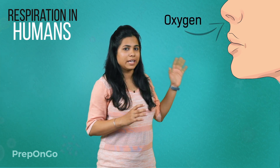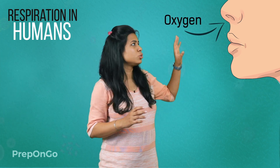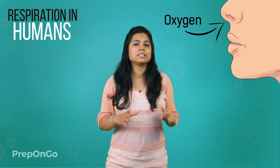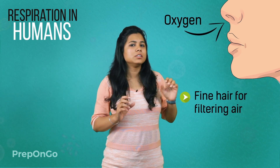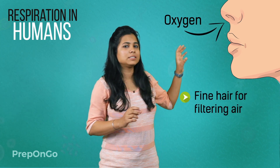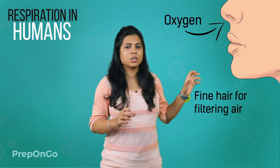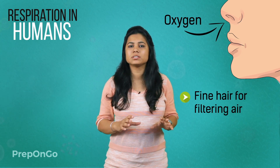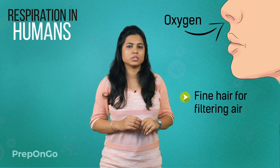We know that during respiration we take in oxygen and give out carbon dioxide. This oxygen is taken in through the nostrils. The nostrils have fine hair that lines the passage, and these passages also have mucus that helps in this process.